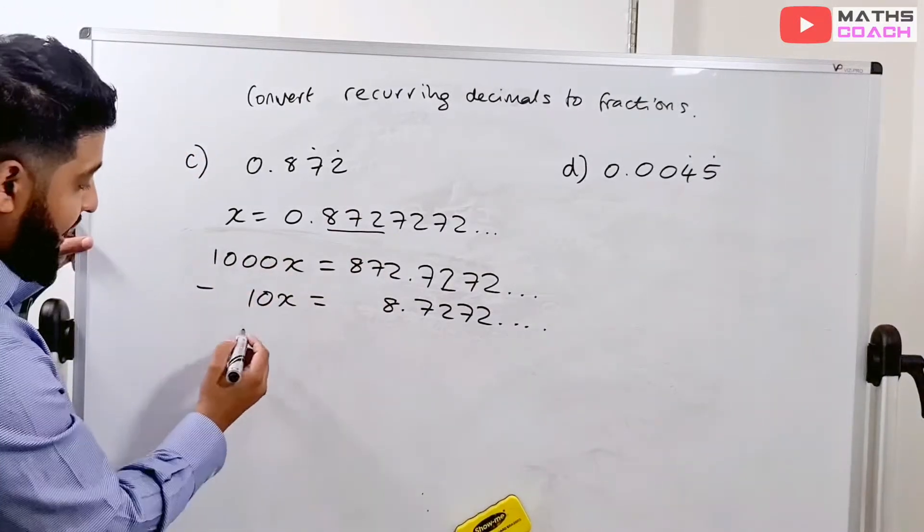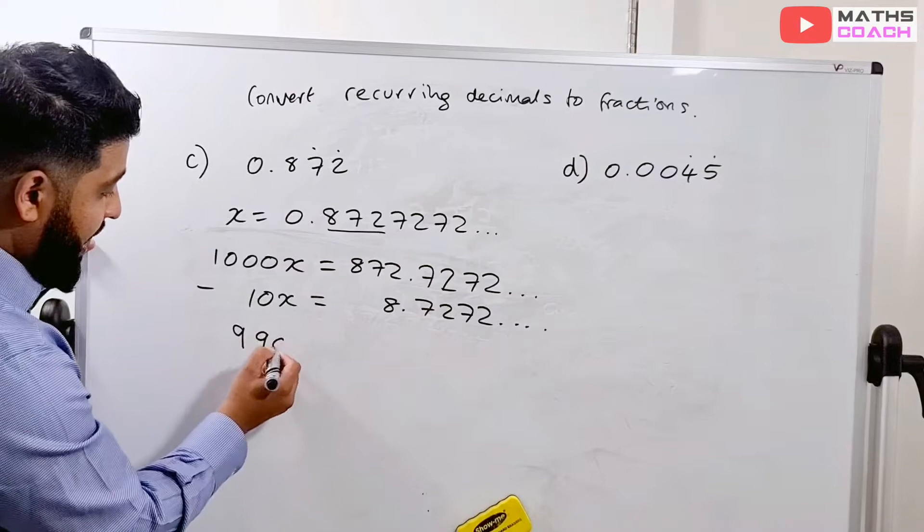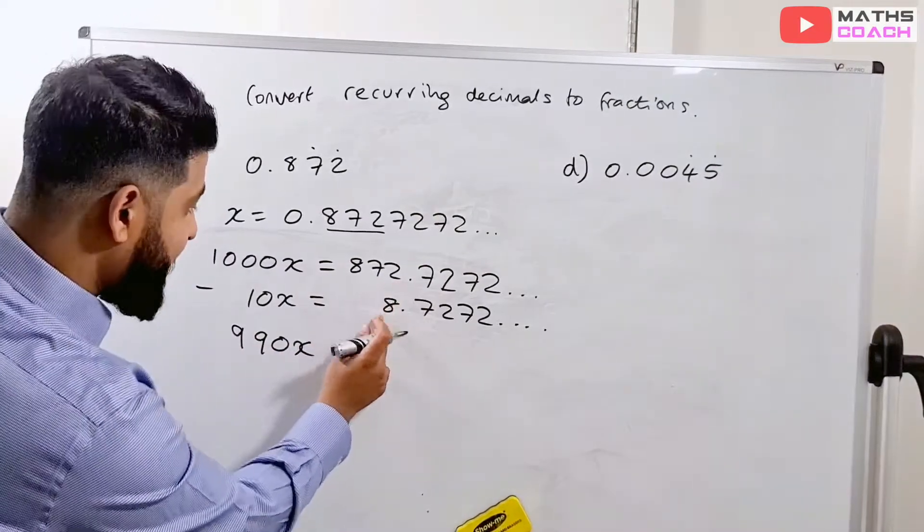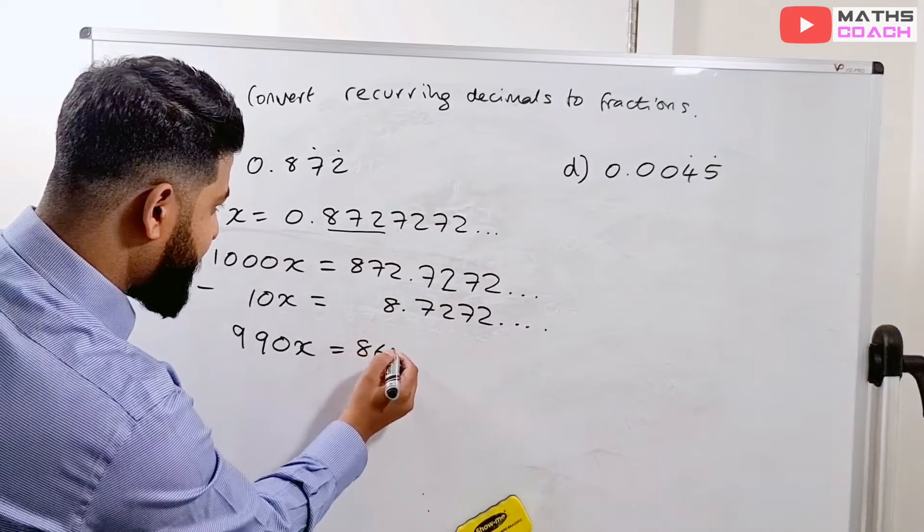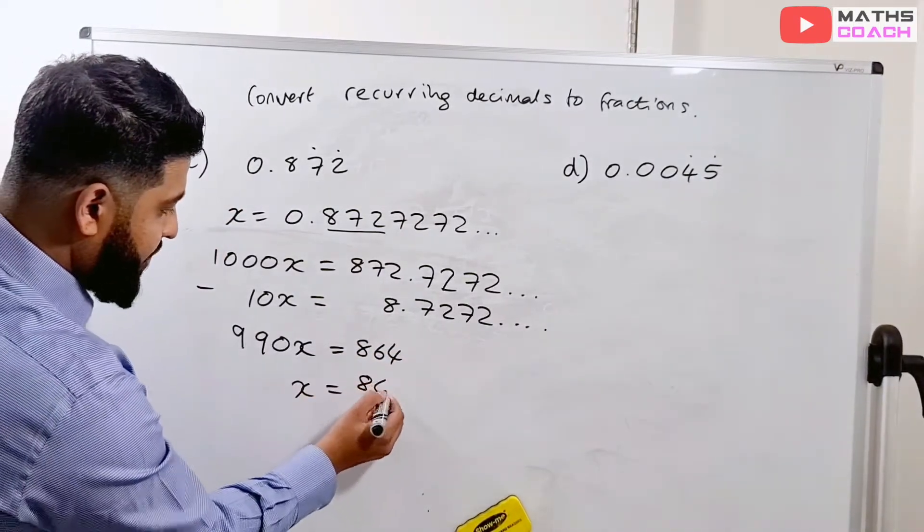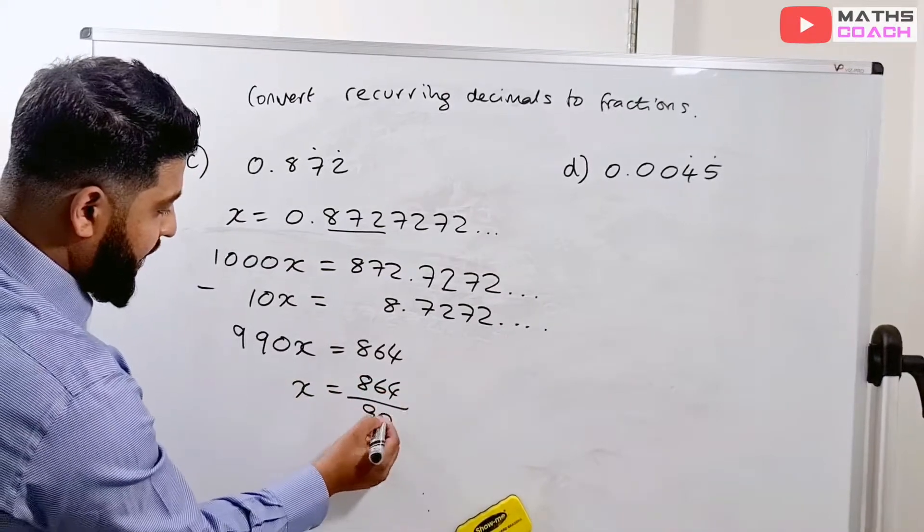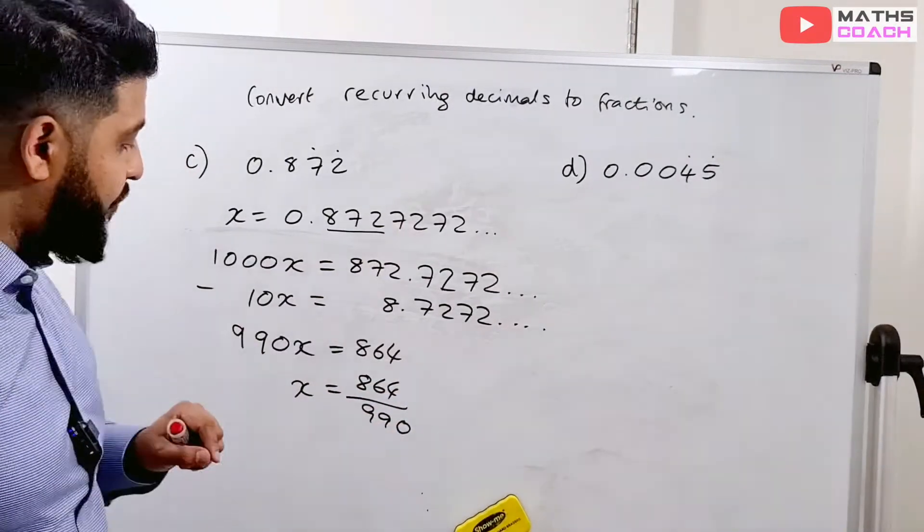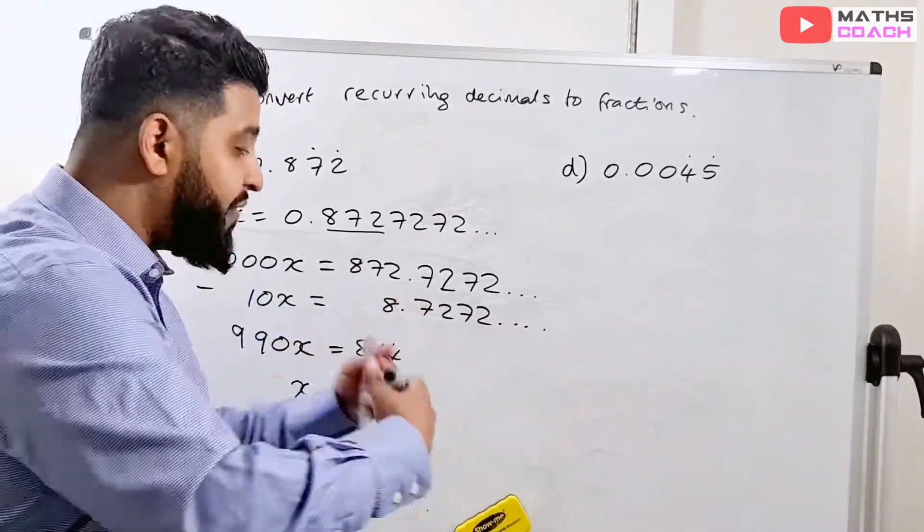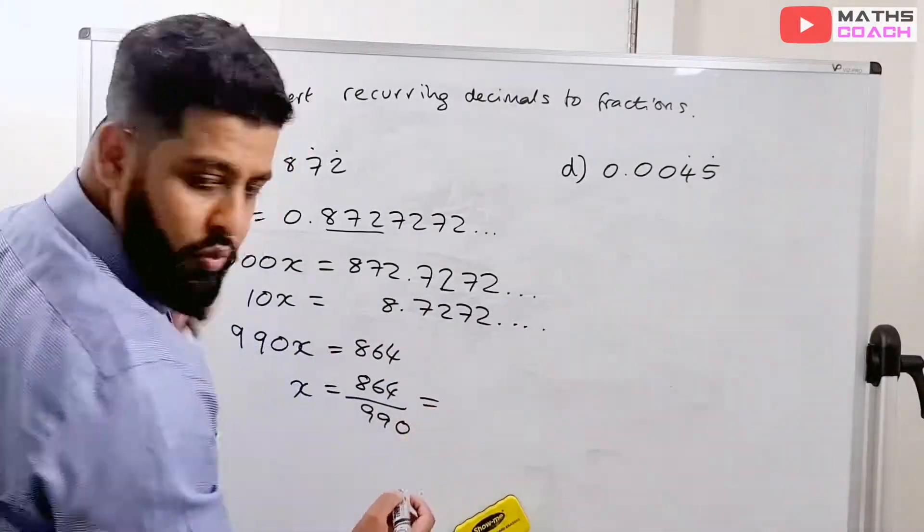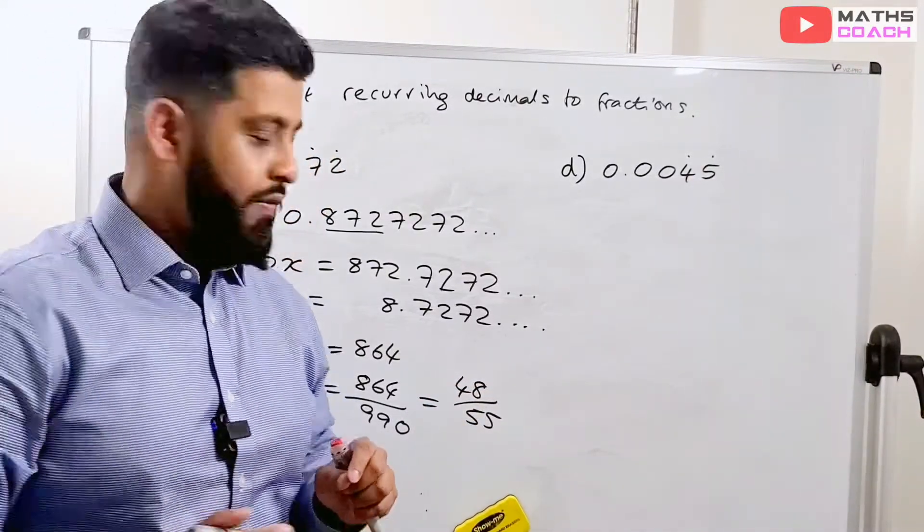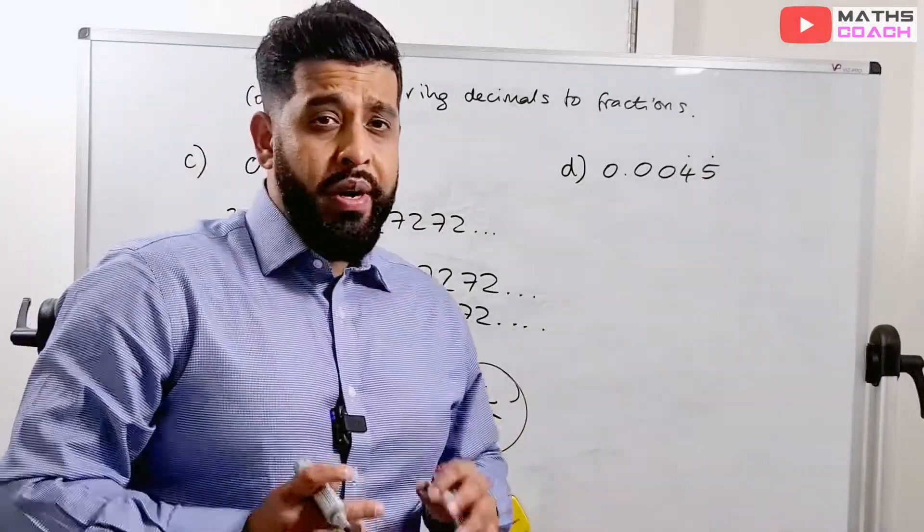So let's do that. 1000x take away 10x is 990x. And 872 take away 8 is 864. And that will be x is equal to 864 over 990. Now, let's see if we can simplify that on our calculators. If you want to do that in your head, you can keep dividing by 2. And we end up with 48 over 55. So that's our final answer.